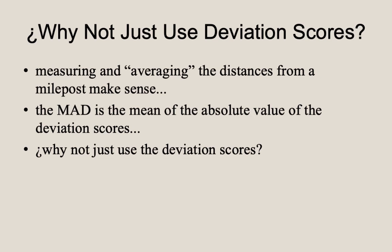So you might be thinking, if the deviation score measures a distance, why not just take the average of the deviation scores? Well, it does make sense to measure and average the distances from a mile post as a measure of spread. But to be clear, the MAD is an average of the absolute deviations, not an average of the actual deviations. And there is a reason we can't use the deviation scores by themselves. This next part of the video explores this concept briefly and involves some mathematical details. If you would like to skip ahead, please jump ahead to timestamp 19 minutes and 50 seconds in the video.